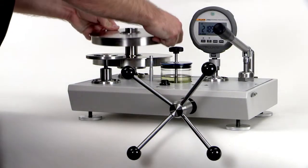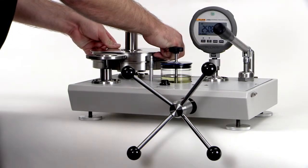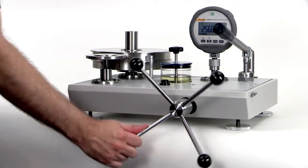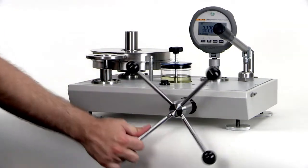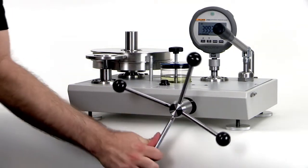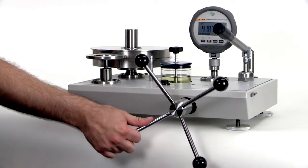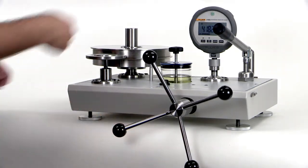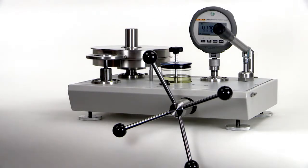Certain steps were taken in the design and manufacture of these deadweight testers to ensure that this specification can be met without additional calculations by the user. At the time of manufacture, the amount of mass required to generate a given pressure at the customer's gravity is calculated. The masses are then trimmed to this value.